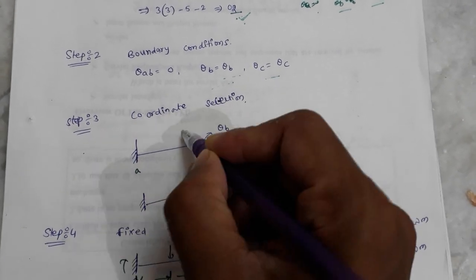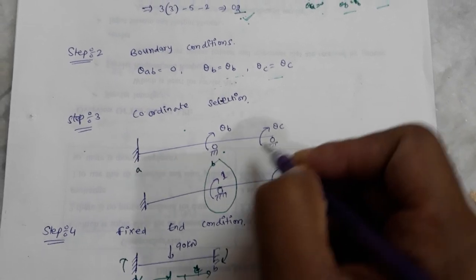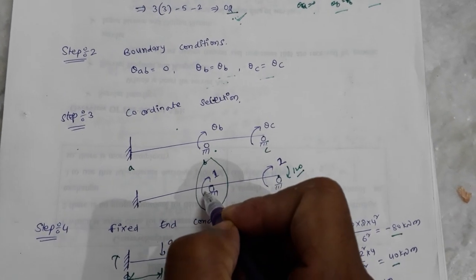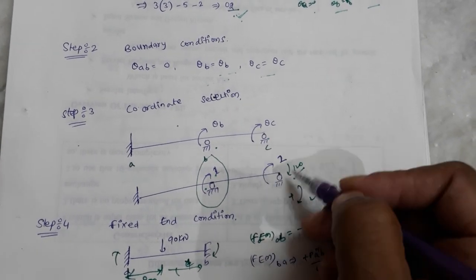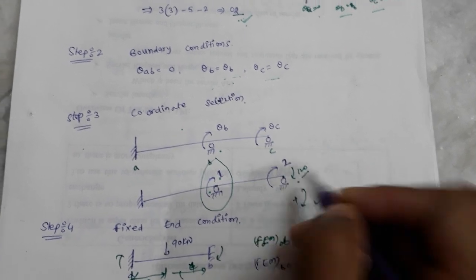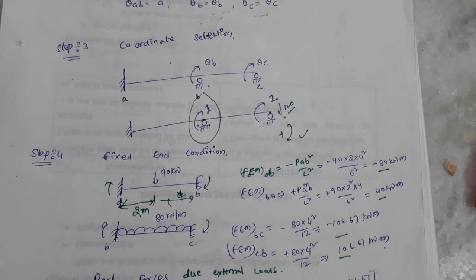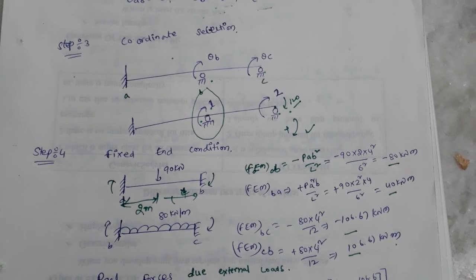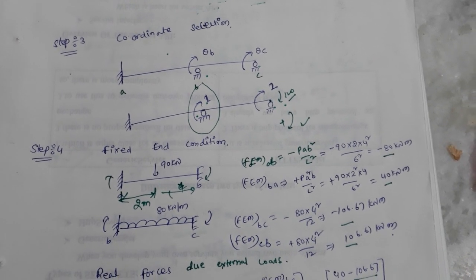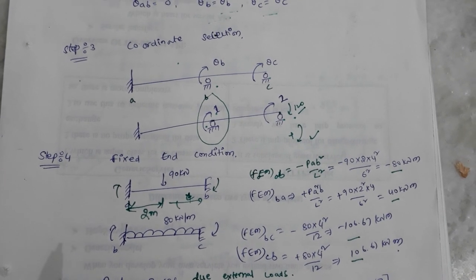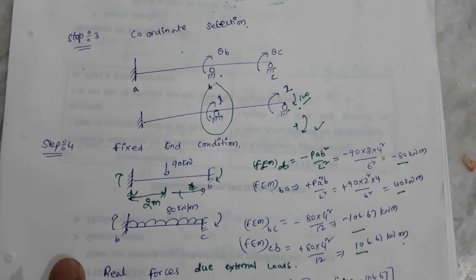Next, we select coordinates. Theta-b is assigned position one and theta-c is assigned position two. Then we determine the fixed end moments. The major assumption of the displacement method is the fixed end moment condition — we calculate the solution using fixed end moments only.